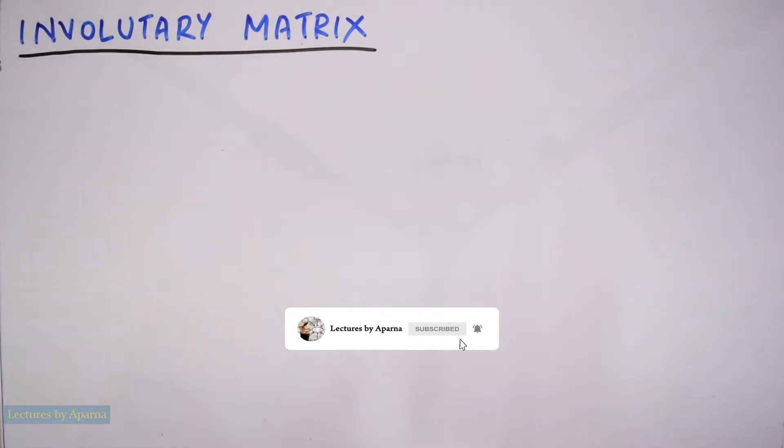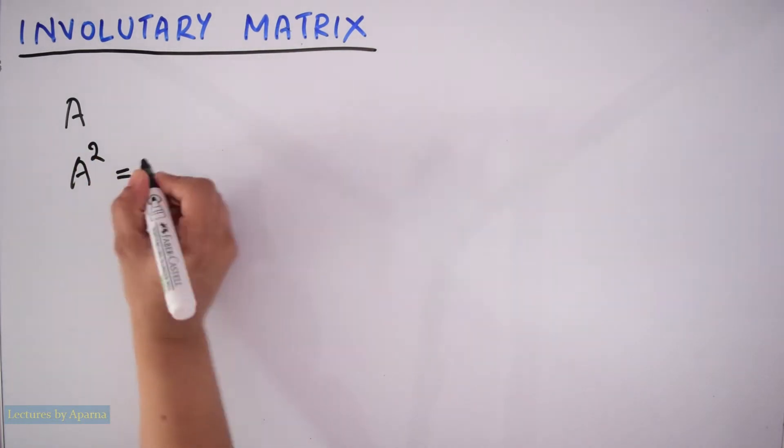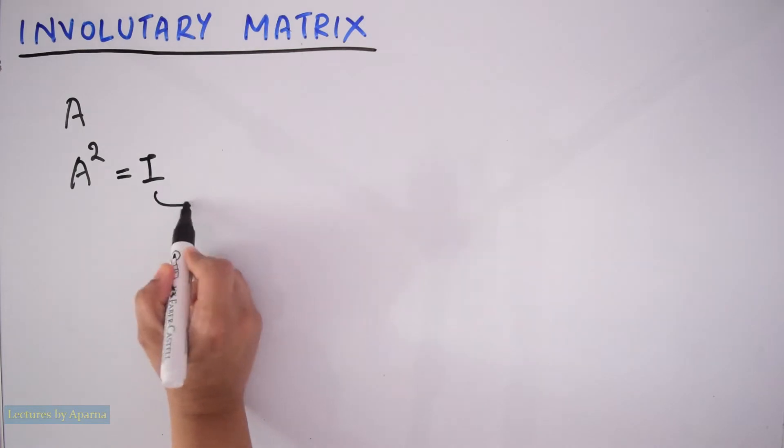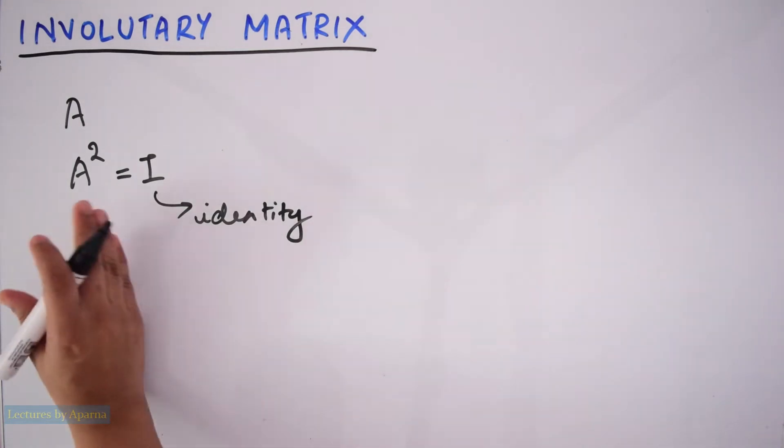Consider a matrix A. If you find A square and if you get this A square is equal to I, where I is an identity matrix, then A is said to be an involuntary matrix.